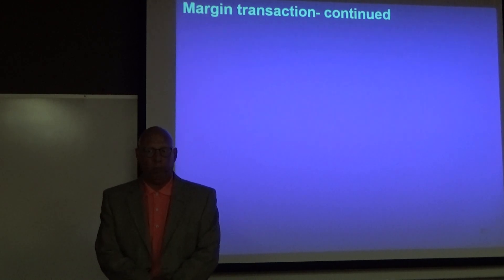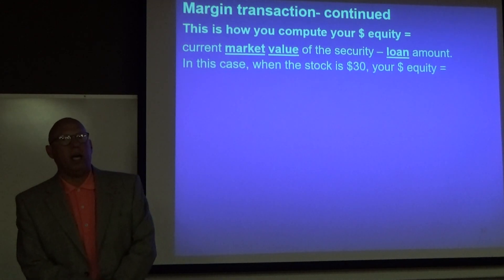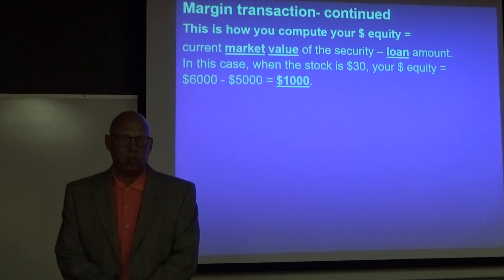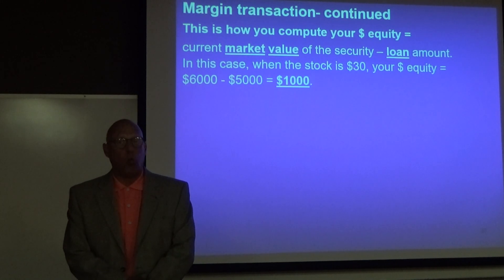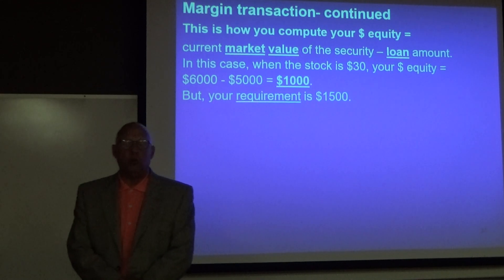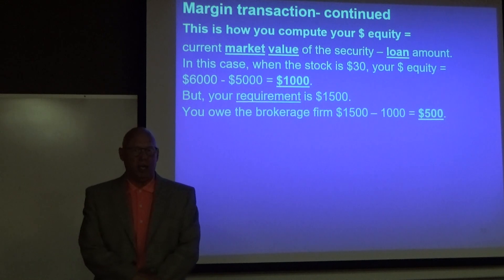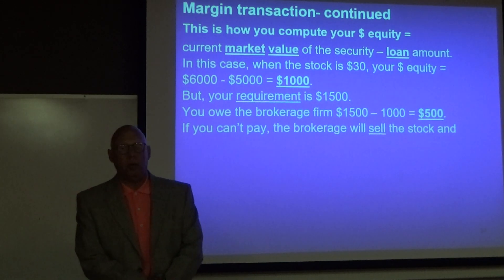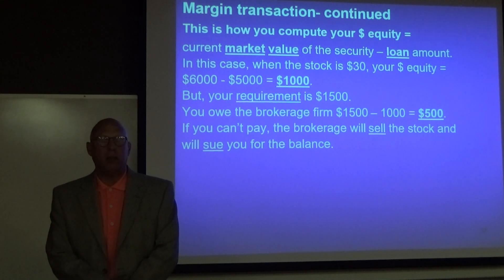Now let's compute your actual equity. You take the current market value of the security and subtract out the loan amount. When the stock is at $30, your dollar equity is $6,000 minus the $5,000 you owe the brokerage firm, leaving equity of $1,000. But your requirement is $1,500, so you must kick in an additional $500 in cash. If you cannot or will not pay that, the brokerage firm will sell the stock and sue you for the balance of the loan.